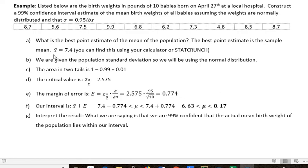X-bar is our sample mean and mu is our population mean. That's what we're estimating, and we're using our sample mean to estimate our population mean. We are given the population standard deviation, so we'll be using the normal distribution rather than a t-table.